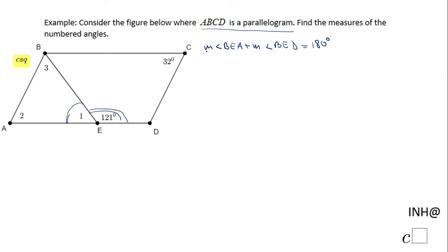And now we can find the measure of angle one just simply by subtracting 121 from 180, and we have the measure of angle one is 59 degrees.